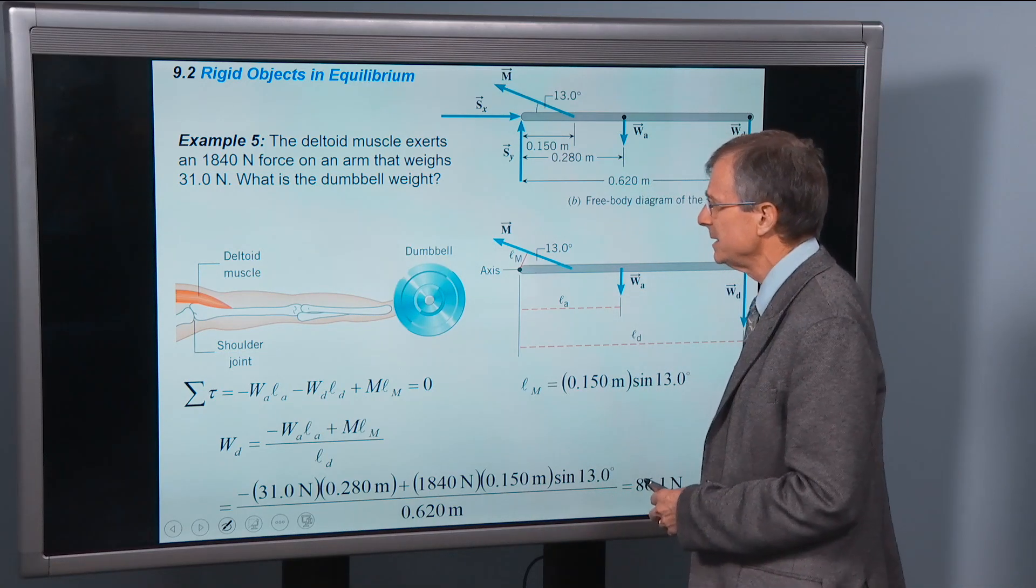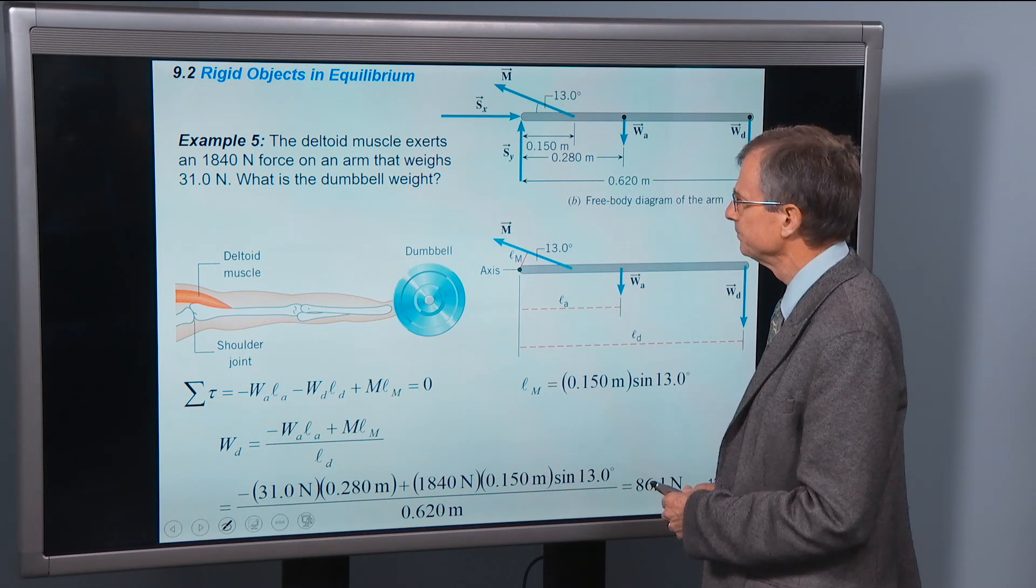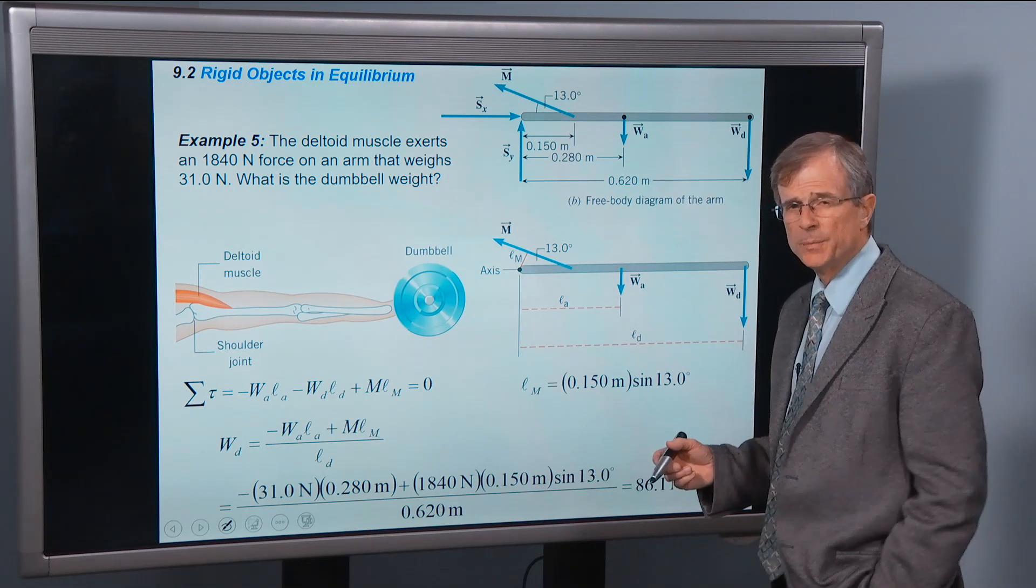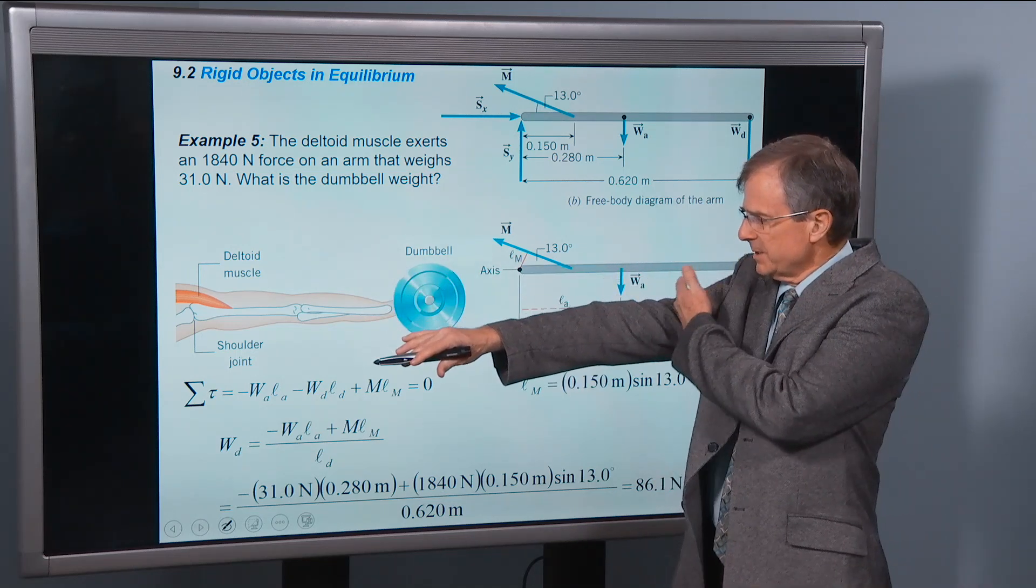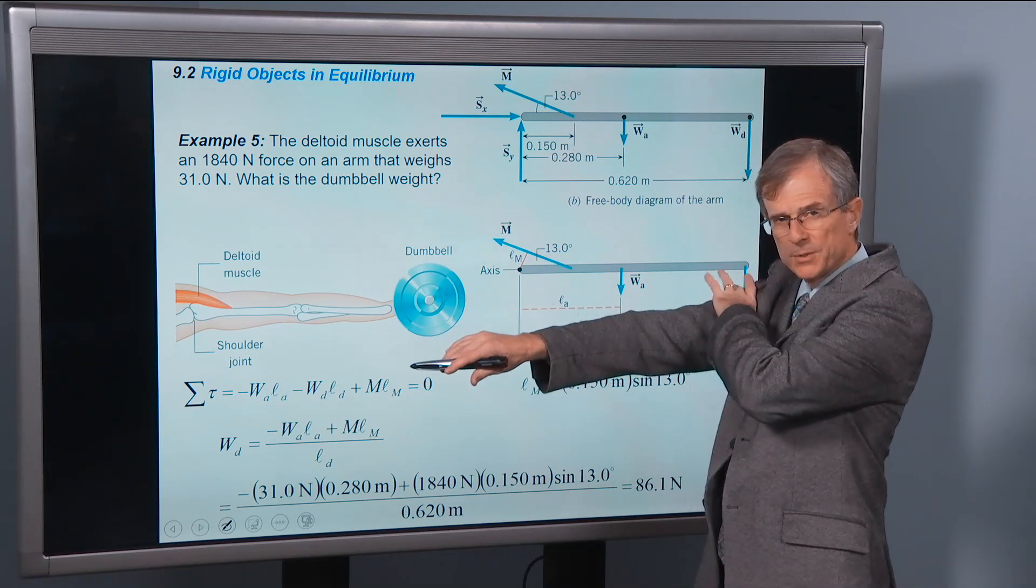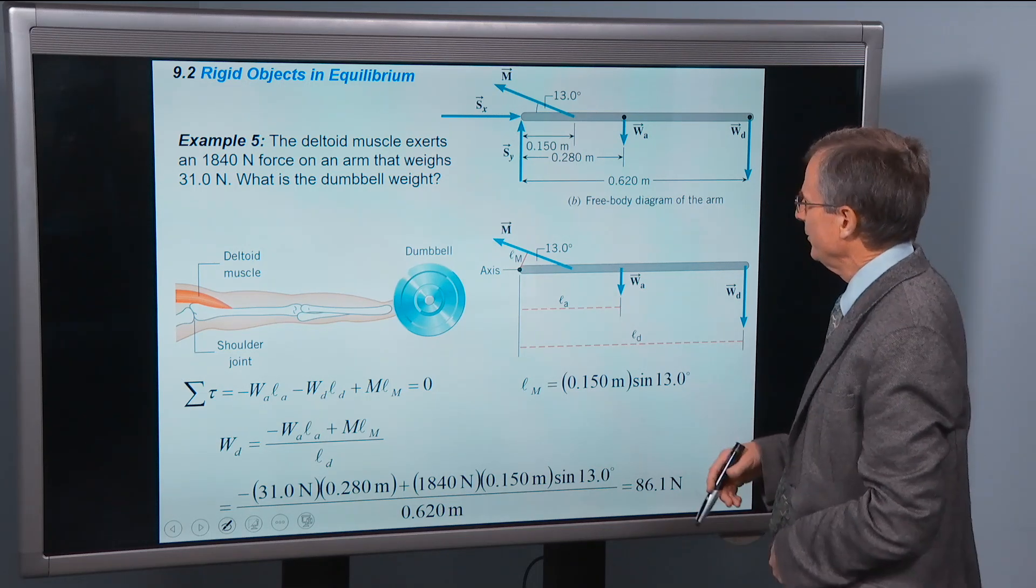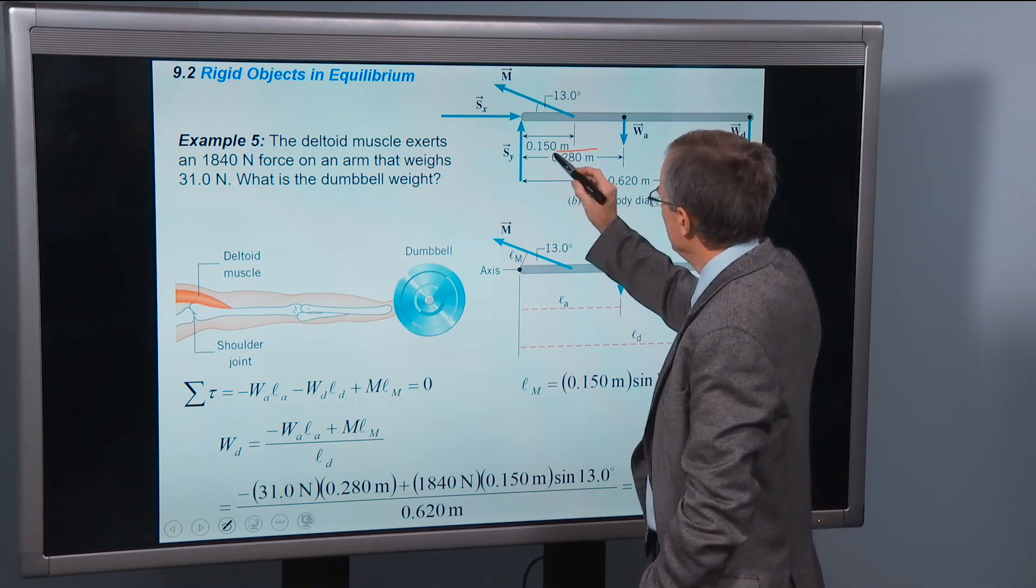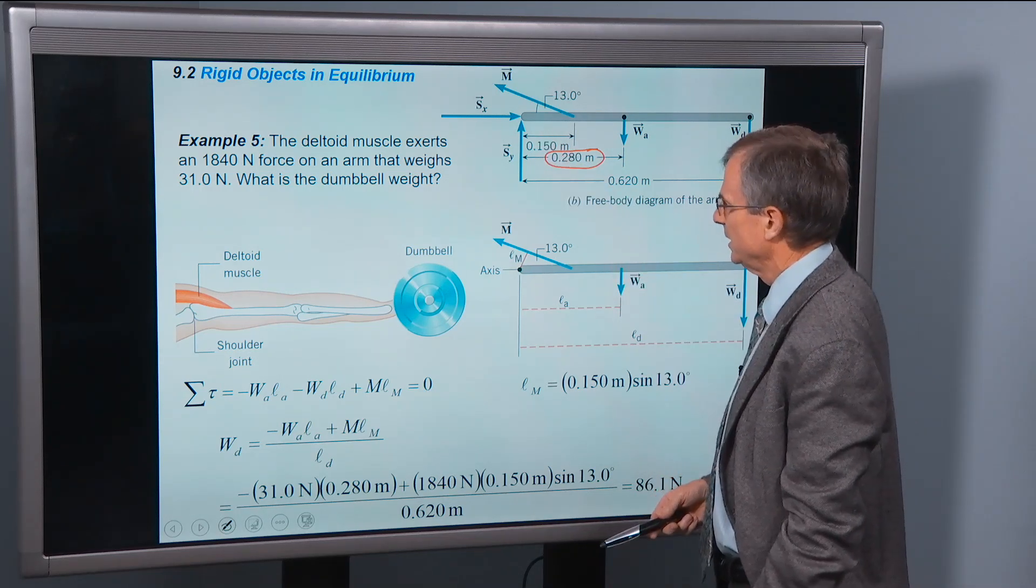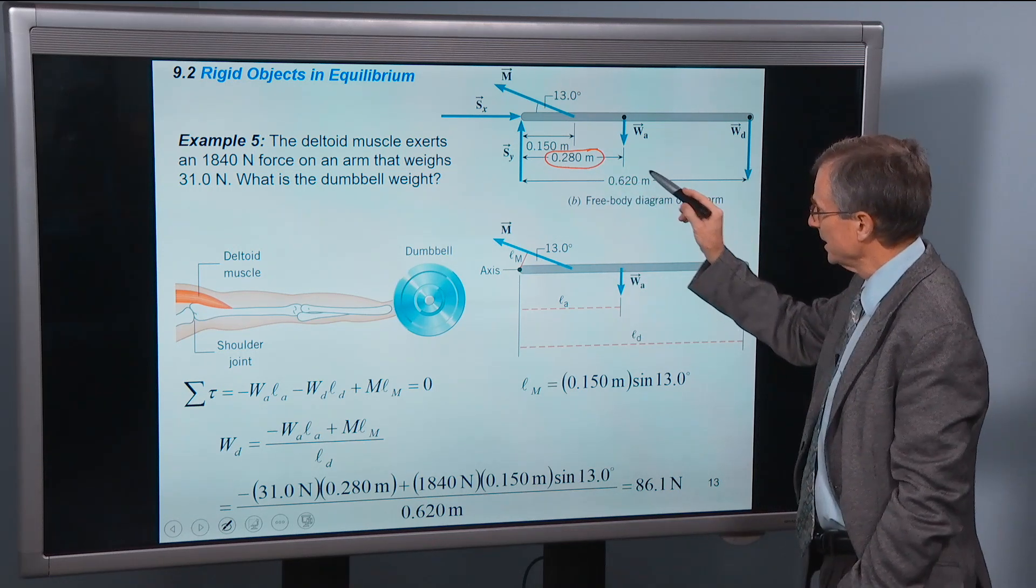Deltoid muscle exerts an 1840 newton force on an arm that weighs 31 newtons. What is the dumbbell weight? If the arm is considered to be uniform, that its weight distribution is uniform. Now it isn't. It's a little bit more massive up here than it is down there. But we're just going to treat it as if it were uniformly distributed. Actually, we're not even assuming that. What we're actually going to do is we know where this center mass of the arm is located. It's located close to that shoulder muscle, about 0.28 meters. The total length of the arm out to where the dumbbell is held is 0.62 meters.